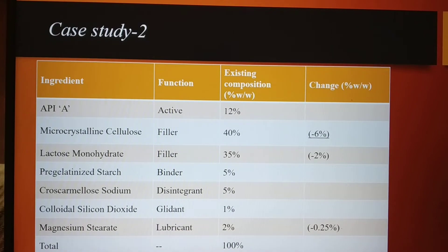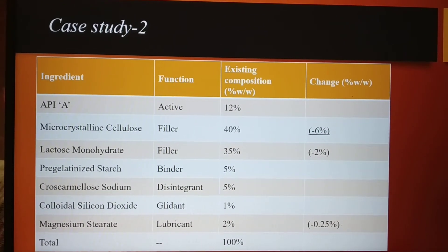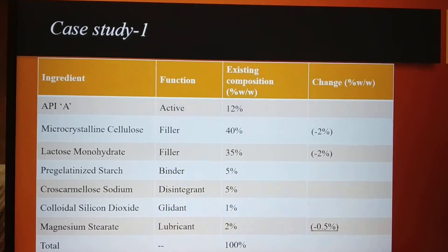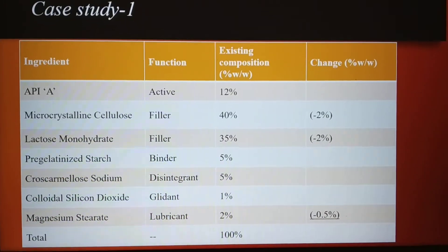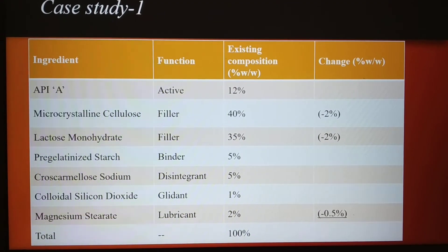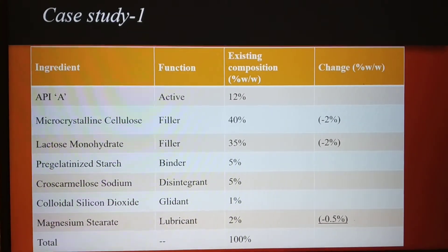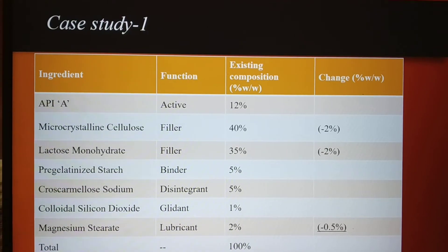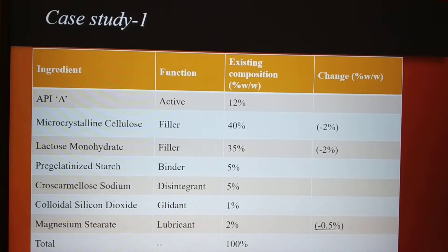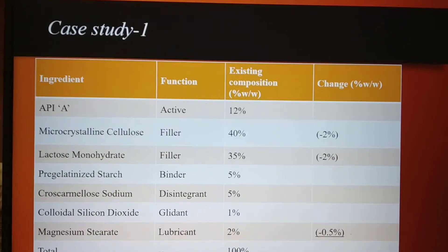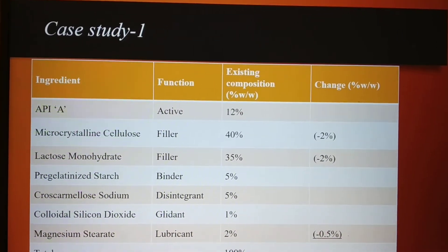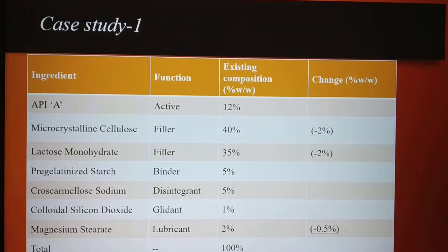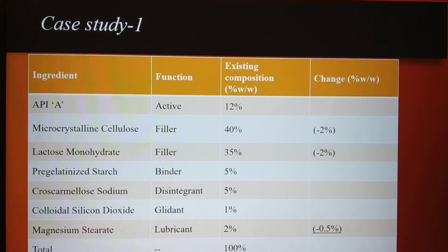Now I'm going to explain the level of changes in Case Studies 1 and 2. In Case Study 1, the percent change for filler is: 2% for lactose and 2% for microcrystalline cellulose, so the total filler change is 4%, which falls under Level 1 change. But wait — the magnesium stearate concentration change allowed as per Level 1 is only 0.25%; however, in this case, magnesium stearate quantity has been reduced by 0.5%.